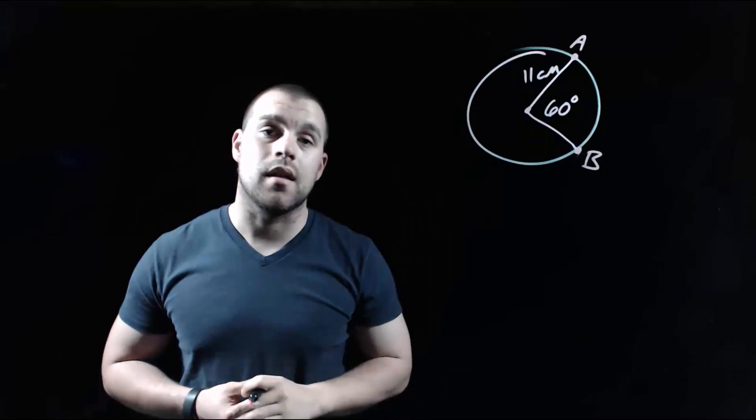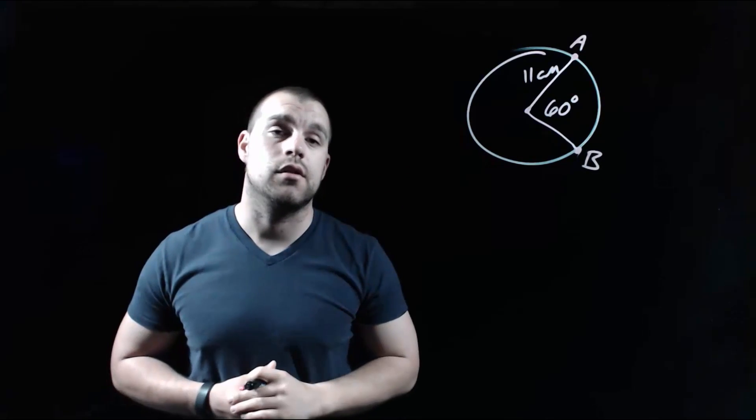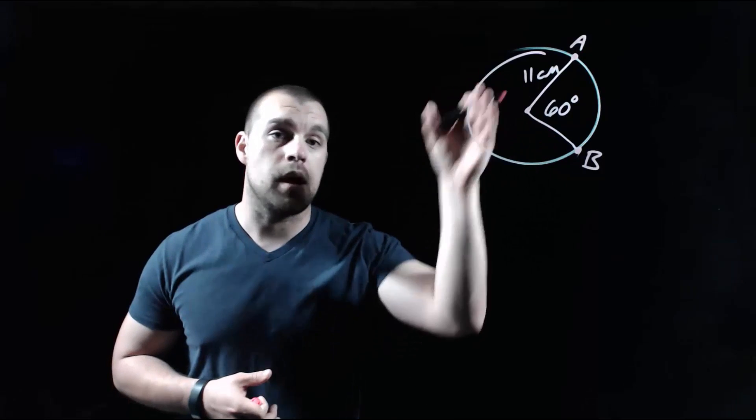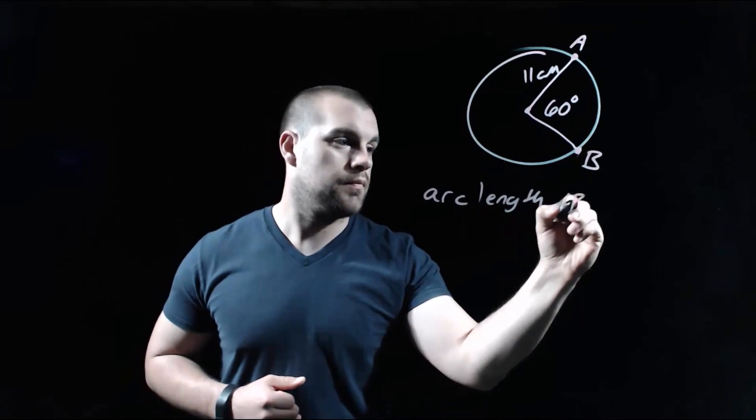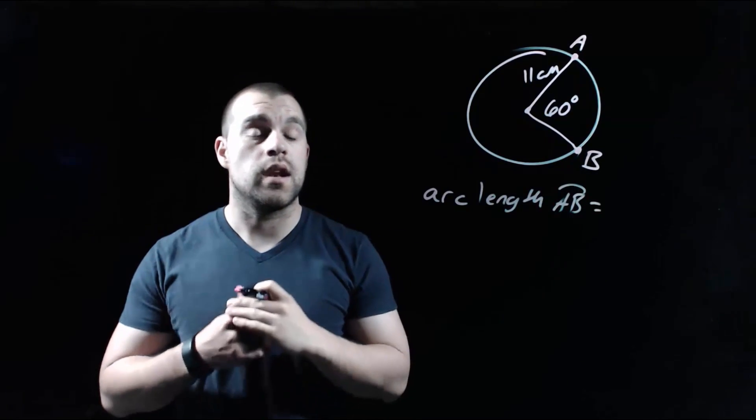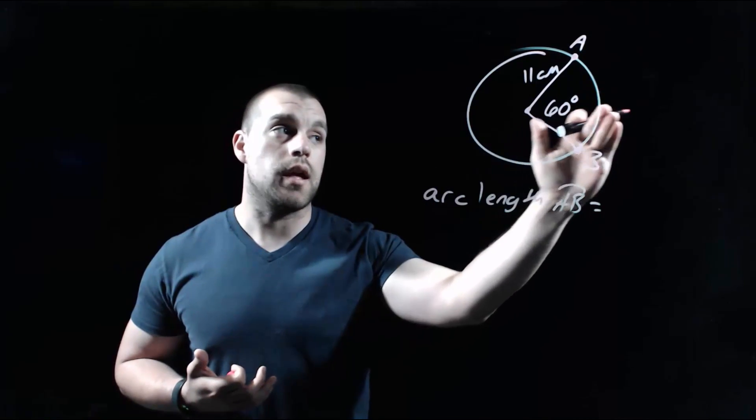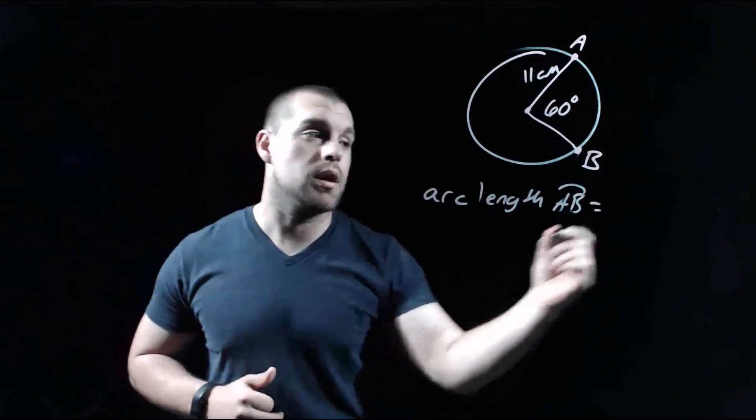In this example, our circle has an 11 centimeter radius and a 60 degree central angle. And we're going to find the measure of the arc that runs from point A to point B. So the first thing we need is the degree measure of the arc. 60 degree central angle tells us that we're dealing with a 60 degree arc.